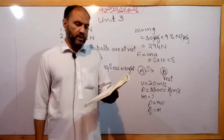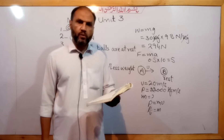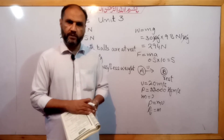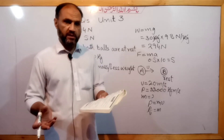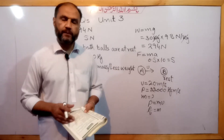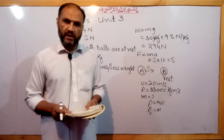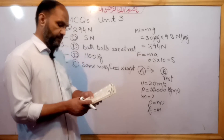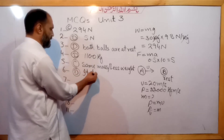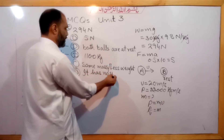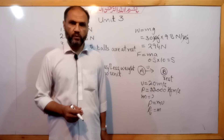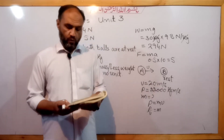Question number 6. The unit of the coefficient of friction is — since friction coefficient is the ratio of two forces, force divided by force, it is dimensionless. The answer is option D: it has no unit. It is a unitless, dimensionless constant.